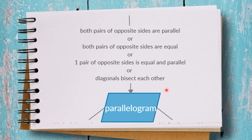The last method to prove a parallelogram is that the diagonals bisect each other. If we have information that the diagonals intersect at their midpoints, then the quadrilateral is a parallelogram. So if one of these four statements is correct, you know that your quadrilateral is a parallelogram.